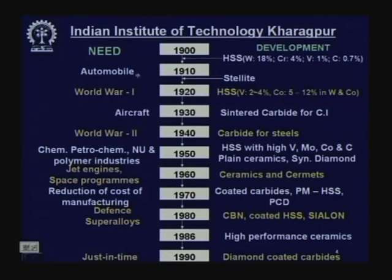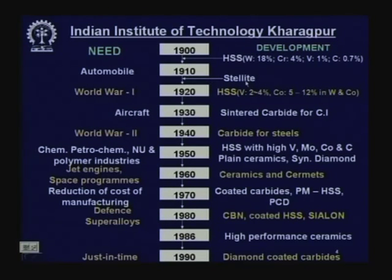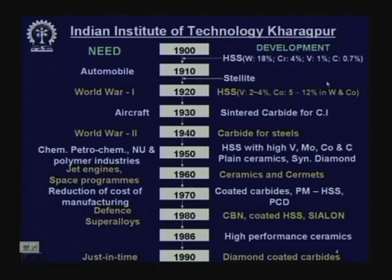The automobile industry came up in a large way around 1910, demanding more improved cutting tool materials to machine faster than high speed steel. A material called stellite was developed around 1913. It is a cast alloy produced simply by casting, composed of cobalt, chromium, tungsten, and similar materials.